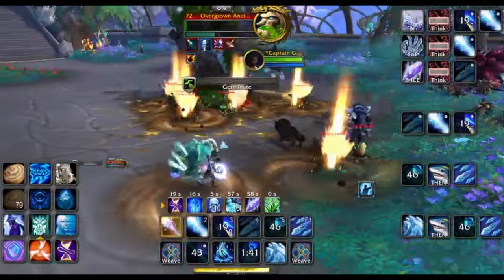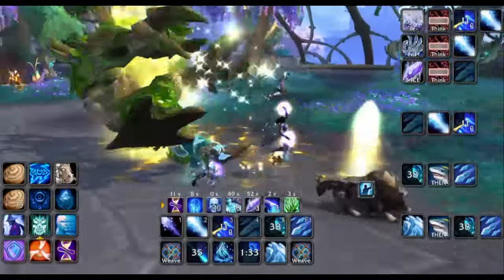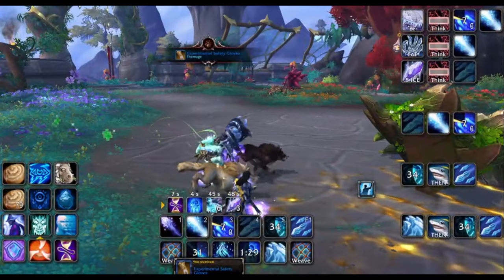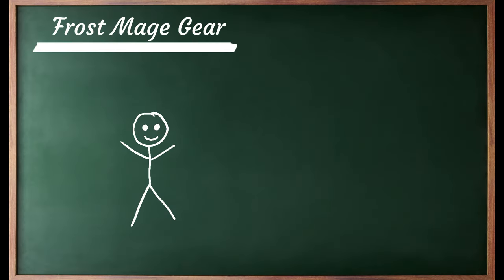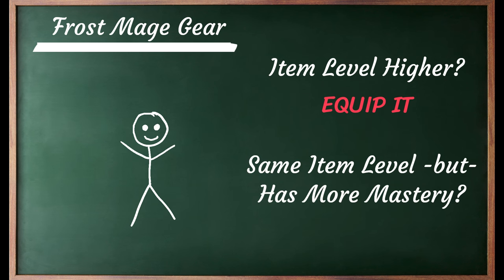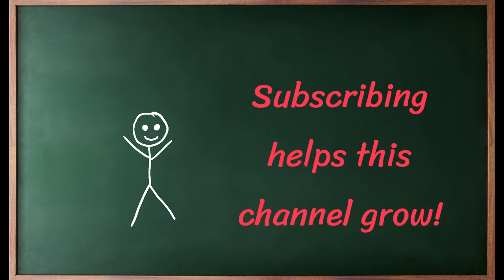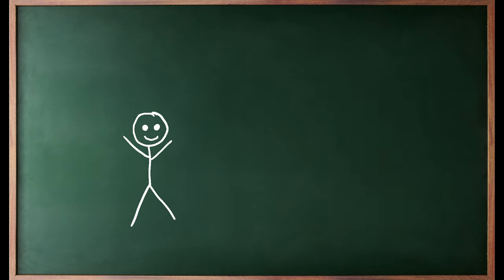I shot out too many Ice Lances — you're going to do that a lot. It's hard to do it perfectly every time. But that's basically how you do single target and AoE. For gear: as you're leveling through heroics and lower-end Mythics, if it has a higher item level go ahead and equip it. If it has the same item level but more mastery, equip that one. Frost Mage is an amazing spec and I hope you enjoy it. I've left out some intermediate stuff such as getting Winter's Chill from Cone of Cold and other advanced techniques. If you liked the video let me know — if there's demand I'll make an intermediate one. Thank you!